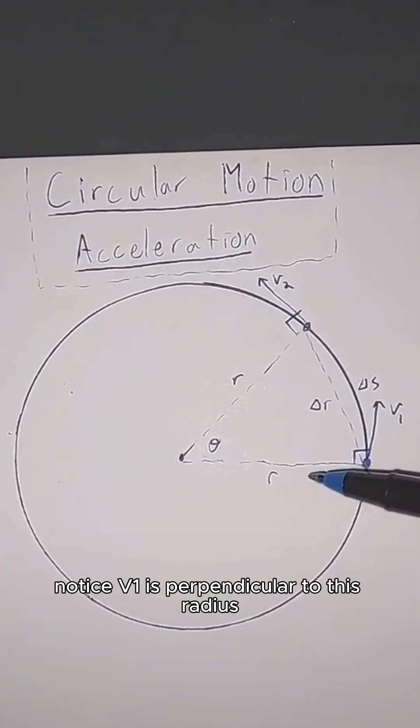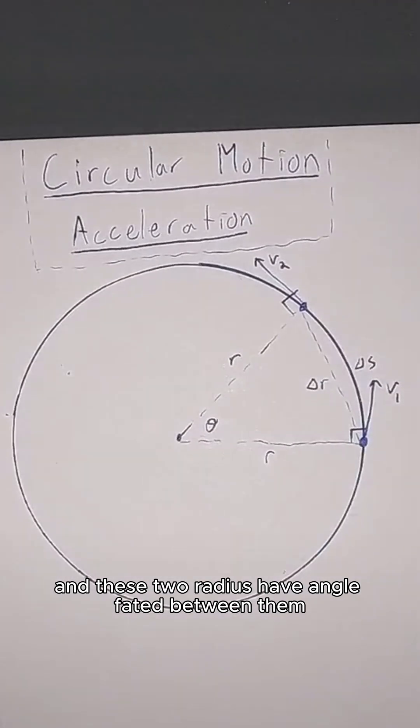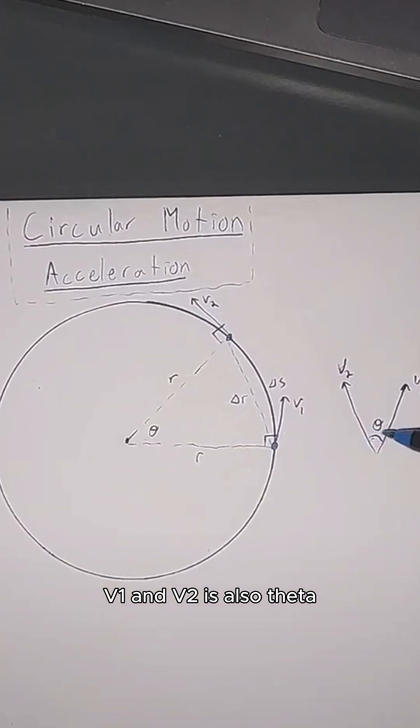Notice v1 is perpendicular to this radius, v2 is perpendicular to this radius, and these two radii have angle theta between them. From here you should be able to tell that the angle between v1 and v2 is also theta.